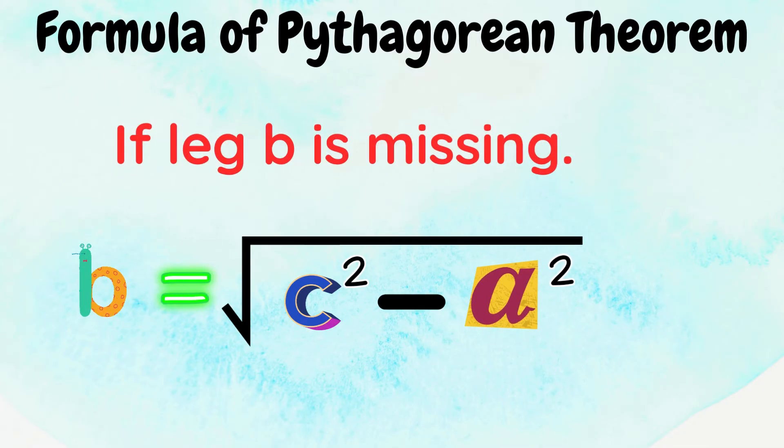Formula if the leg b is missing. We have, b is equal to the square root of c squared minus a squared.